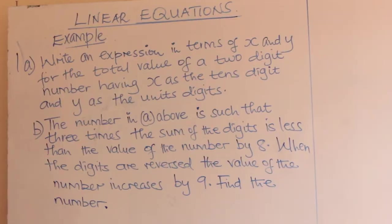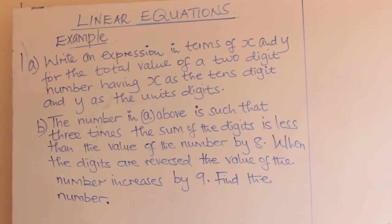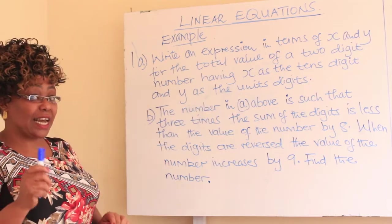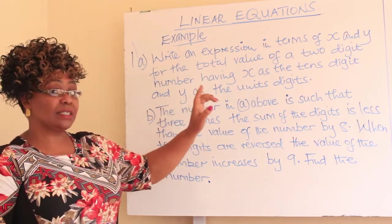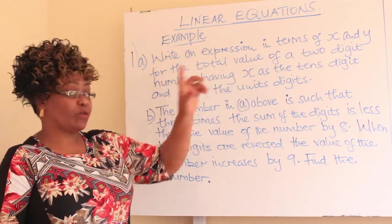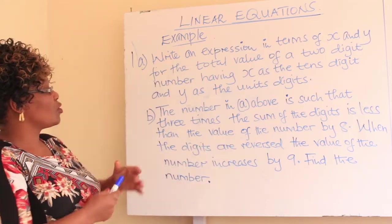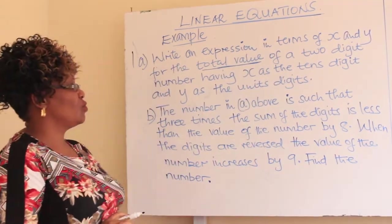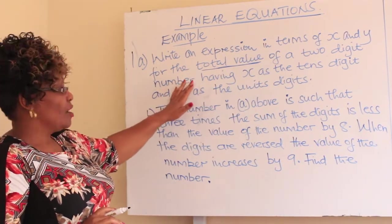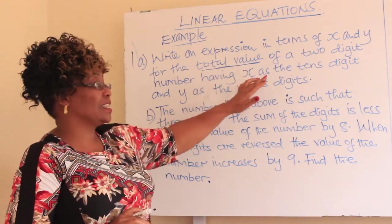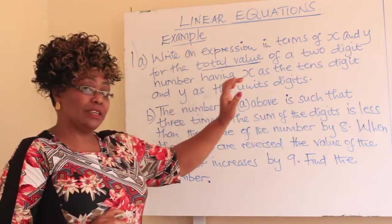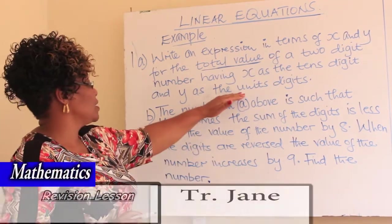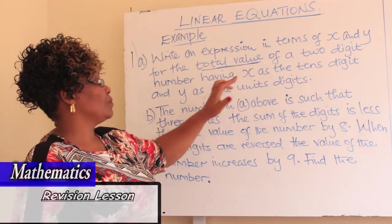Example 1A: Write an expression in terms of x and y for the total value of a two-digit number having x as the tens digit and y as the units digit. We have place value and total value. Units digits are also referred to as ones digits — y is the ones digit and x is the tens digit.